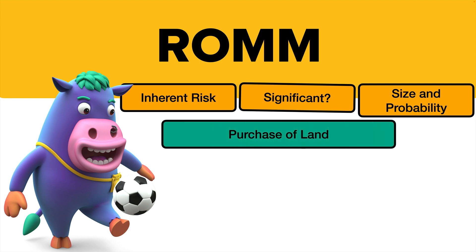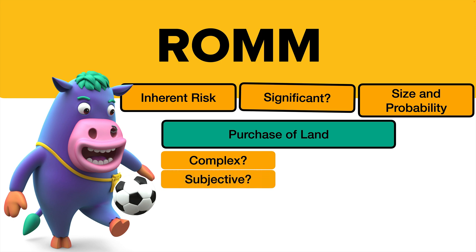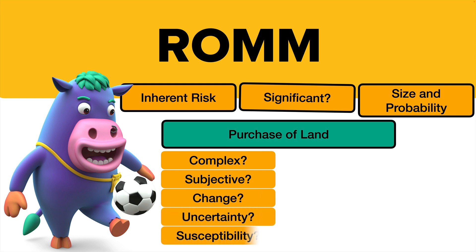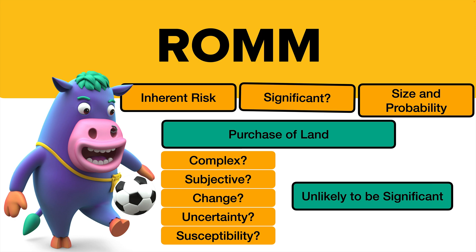You go through the inherent risk questions: is the purchase of land complex? Probably not — it's just the purchase of the cost price, a historic factual amount. Is it subjective? Depreciation may be subjective, but land doesn't get depreciated, so no subjectivity. Presumably not much change or uncertainty over buying land, and not much susceptibility to bias or error. So it's unlikely to be significant, even if it's a big item, because there's no inherent risk — the probability of anything being wrong is very, very small.